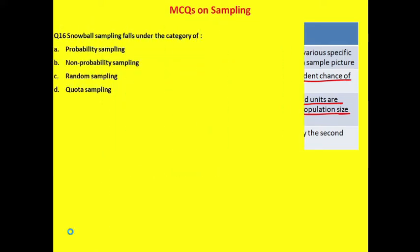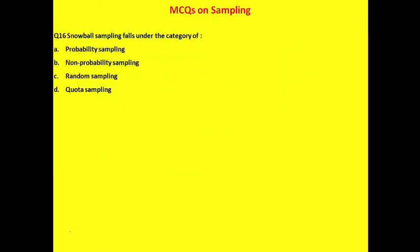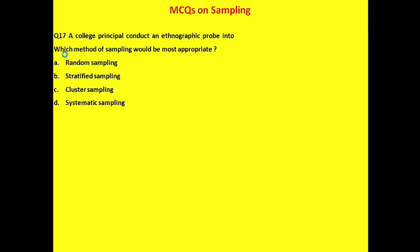Question 16: Snowball sampling falls under the category of: probability, non-probability, random, or quota? The correct answer is option B — non-probability.